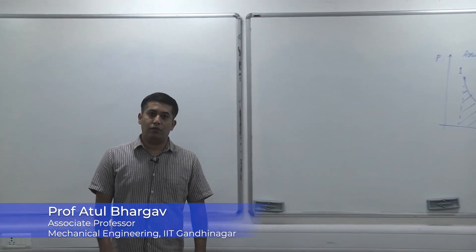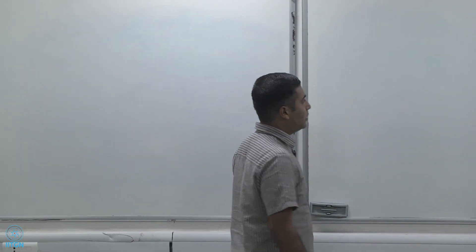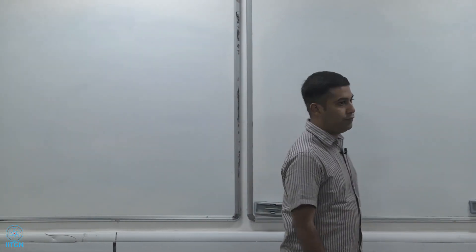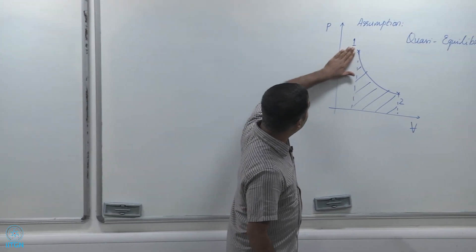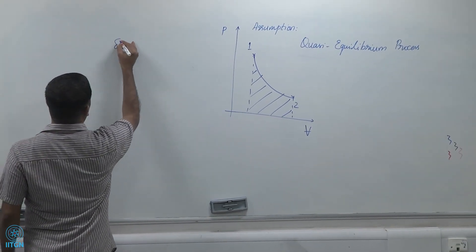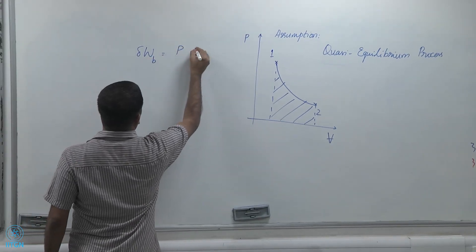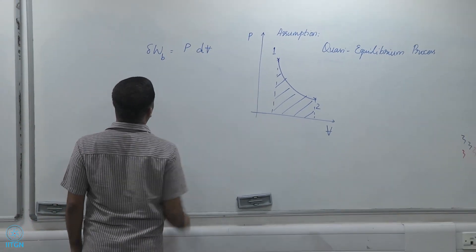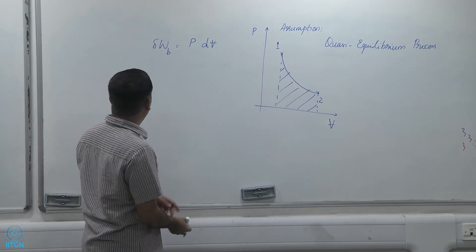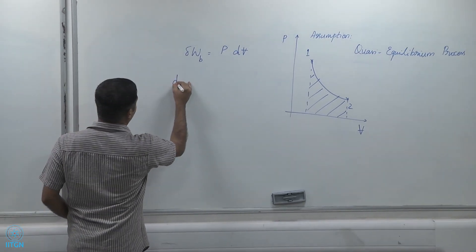In this video we will look at some examples of moving boundary work and how we evaluate moving boundary work. Before we do that, we would like to notice that what we wrote as δW_B is equal to P times dV, and we write this as δW_B and not as dW_B.